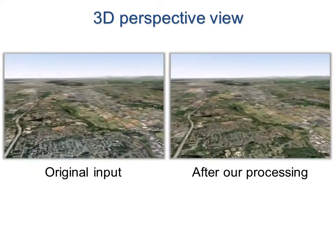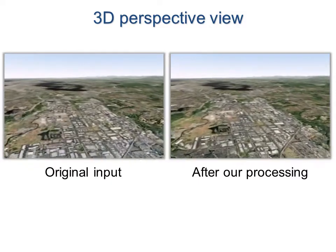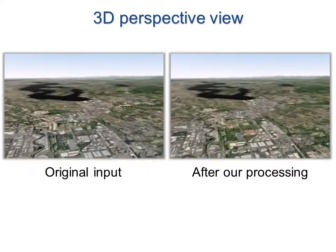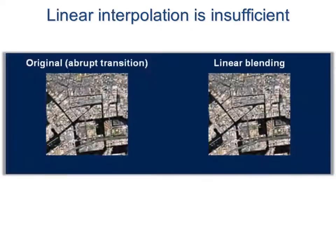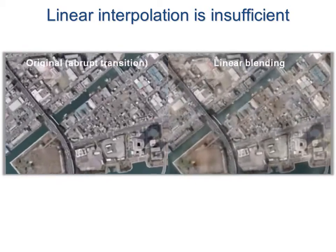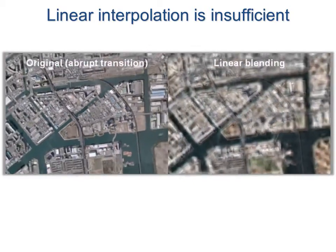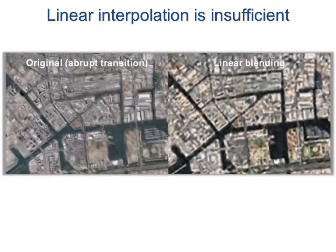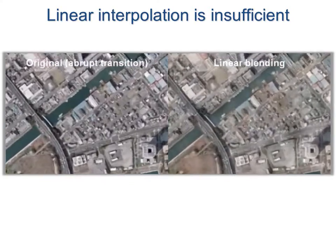Perspective views access several mipmap levels simultaneously, so a non-smooth pyramid, as shown on the left, causes spatial discontinuities. As shown on the right, simple linear interpolation results in blurring and ghosting artifacts. One key problem is that the source images have different structural detail, so any linear operation creates a superposition of incompatible features.